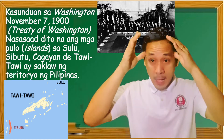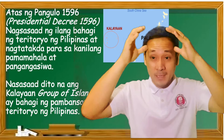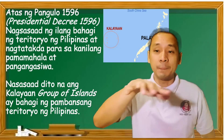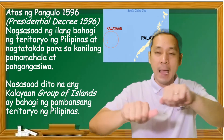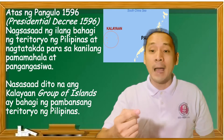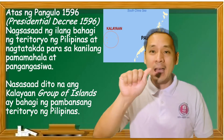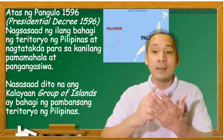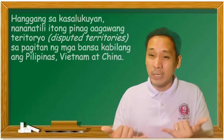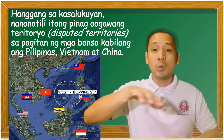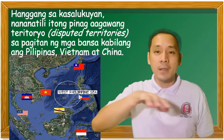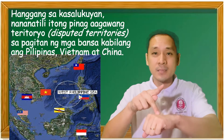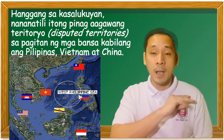Atas ng Pangulo Bilang 1596 o Presidential Decree 1596. Nagsasaad ng ilang bahagi ng teritoryo ng Pilipinas at nagtatakda para sa kanilang pamamahala at pangangasiwa. Nasasaad dito na ang Kalayaan Group of Islands ay bahagi ng pambansang teritoryo ng Pilipinas. Hanggang sa kasalukuyan, nananatili itong pinag-aagawang teritoryo o disputed territories sa pagitan ng mga bansa kabilang ang Pilipinas, Vietnam, at China.